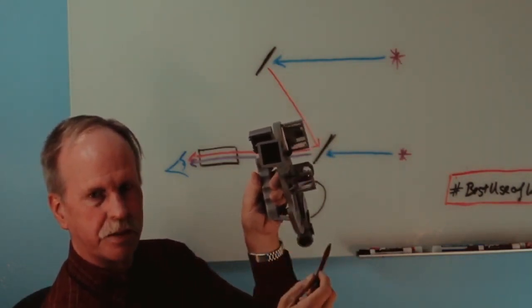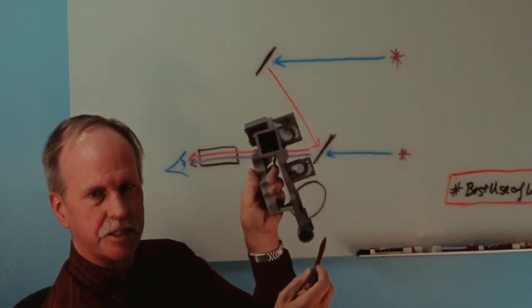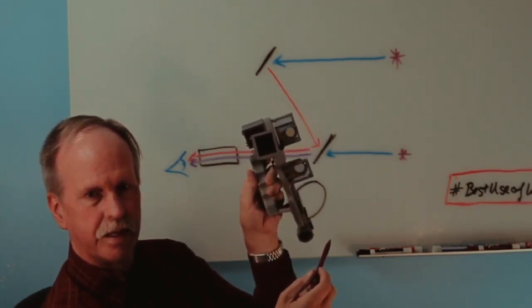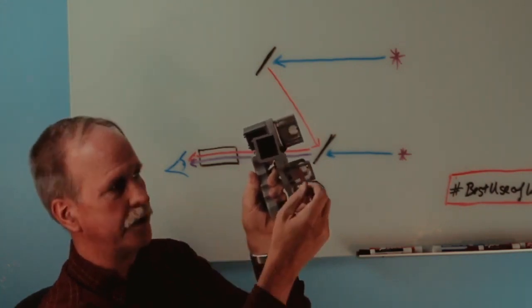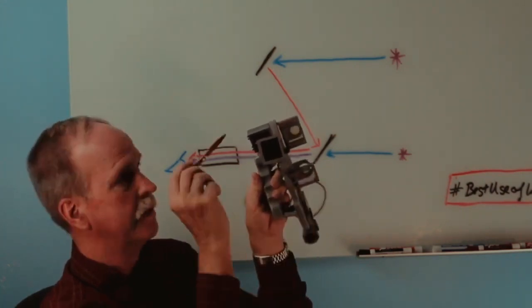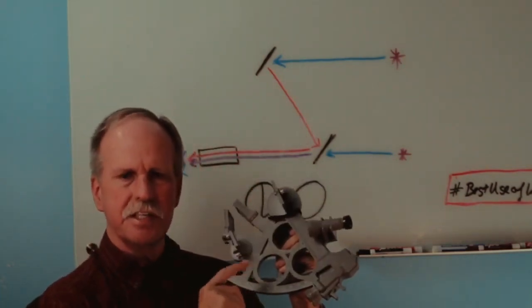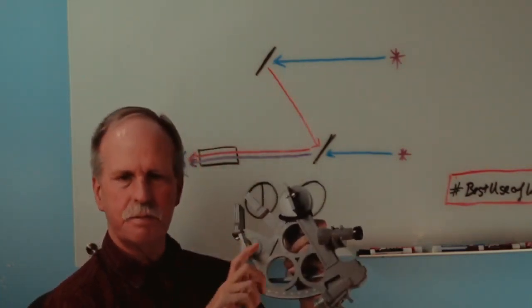That top mirror is fully silvered. The bottom mirror has some silvering on it, but you can see through it. You see the telescope in the back, and you also see the telescope reflected off of this mirror up to the top mirror. Now that's the situation when this is set for zero degrees. You have two parallel lines.